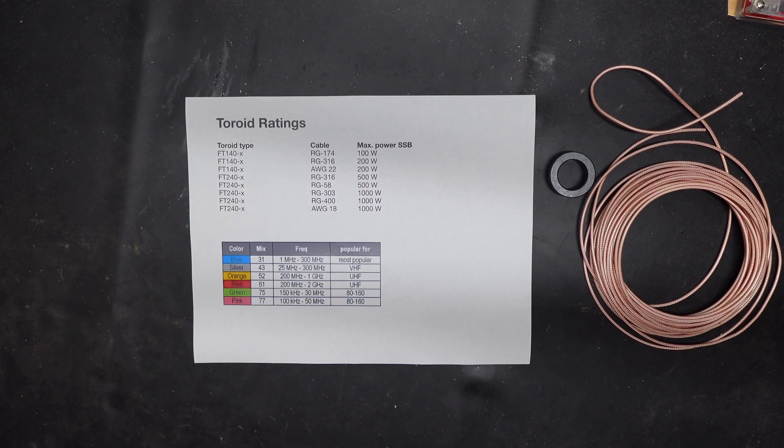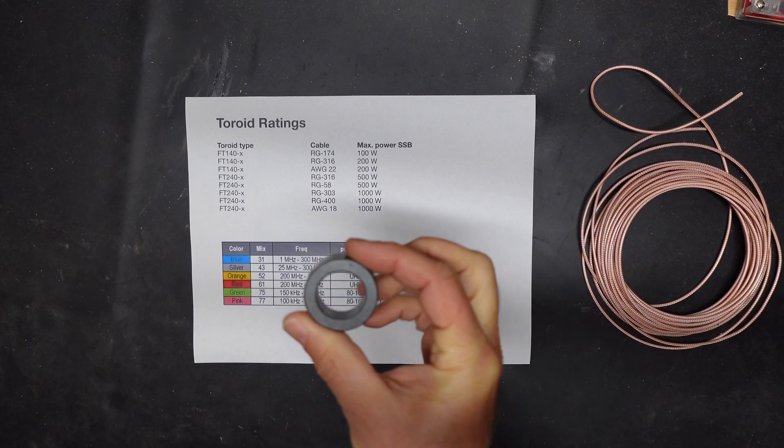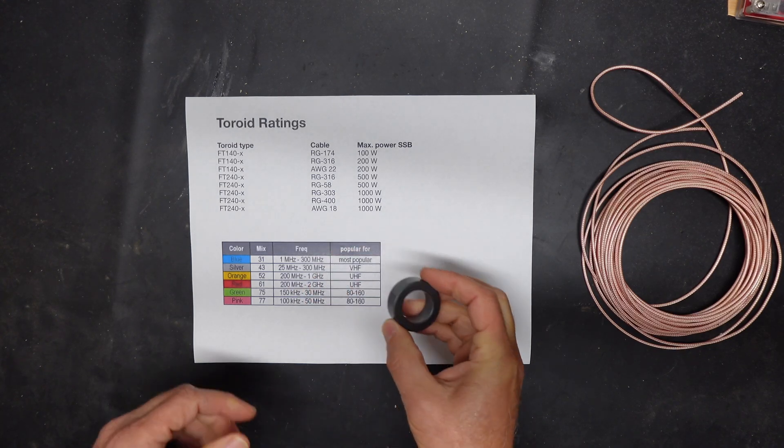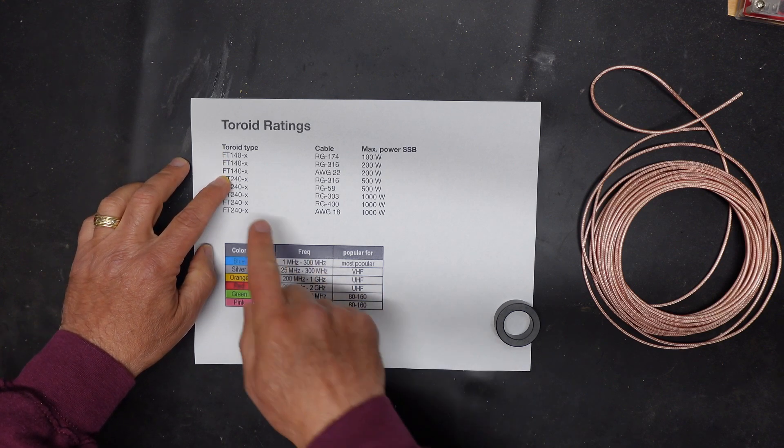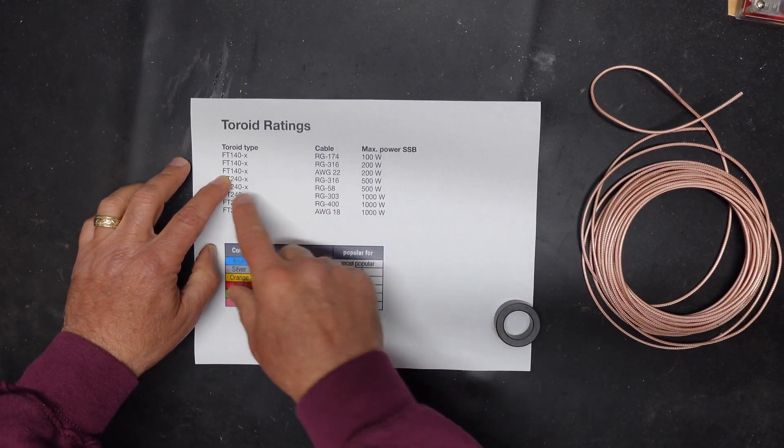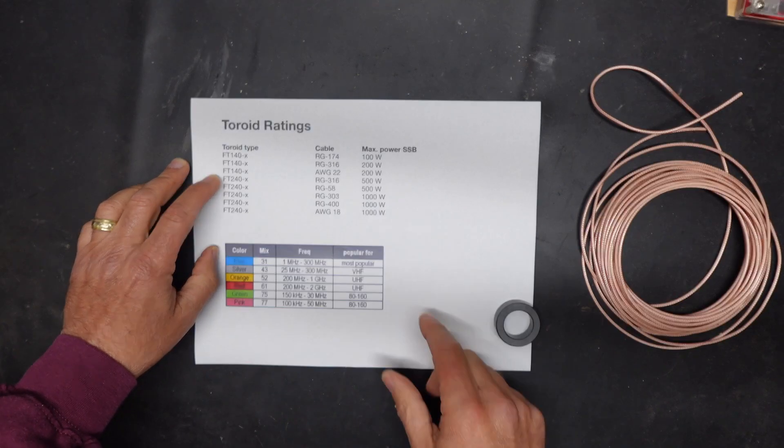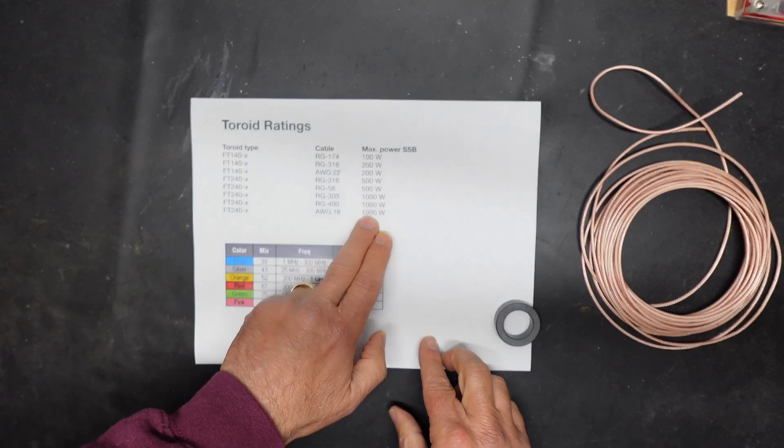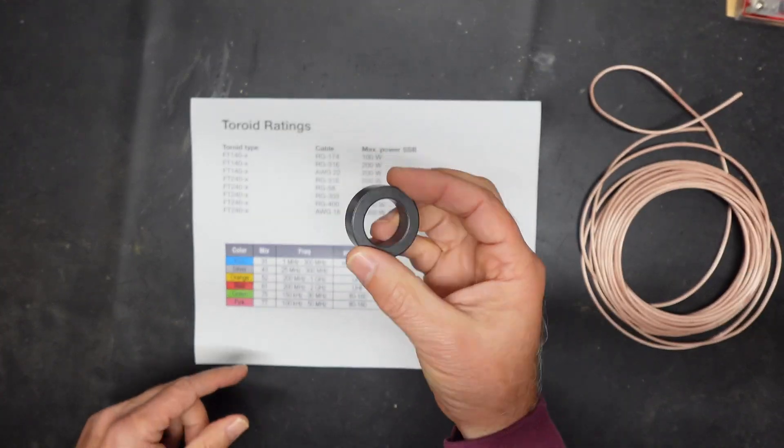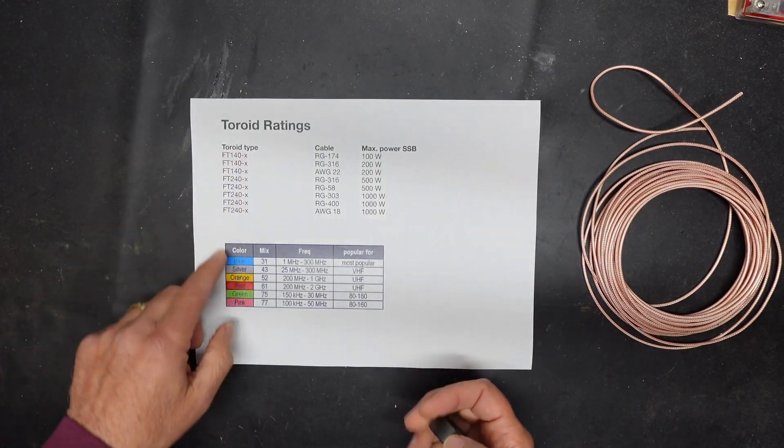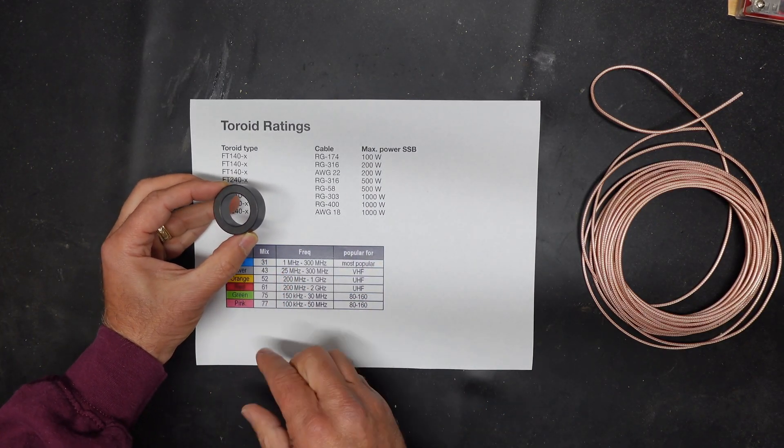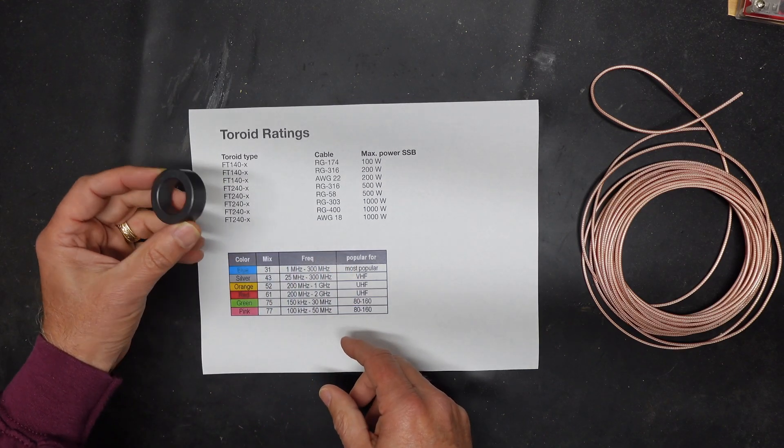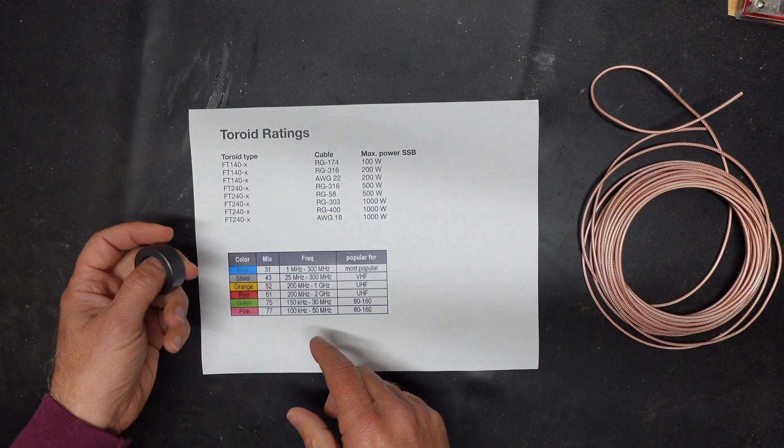So we're in the workshop and we're going to build a common mode choke. We have the toroid here, the ferrite toroid, and this is a little table. You can see that the FT140s, basically the 140 signifies kind of the power so the 140s are the lesser powers and then the FT240s are higher powers. And this is an FT140 and the suffix here is the mix and so the mix dictates what frequency range this can cover. So this is an FT140-31 and so this is perfect for HF.